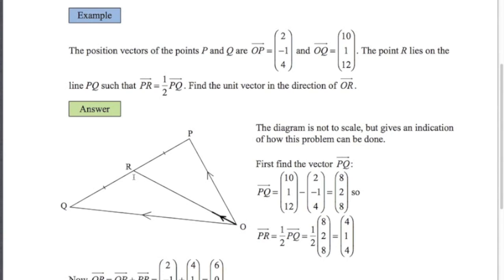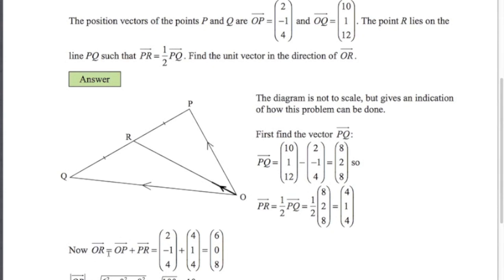So now if I want to get from o to r. I think the simplest way is to go from o to p plus p to r. So there we go, o to p plus p to r. So there's o to p. We're given that one. We've just worked out p to r. So 6, 0, 8 is this vector from o to r.